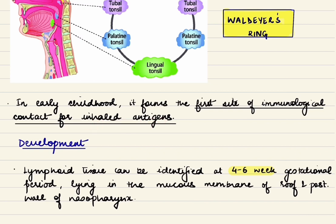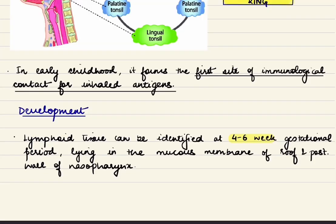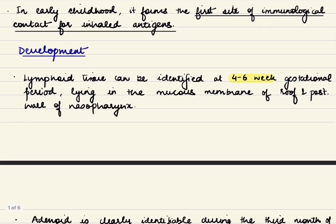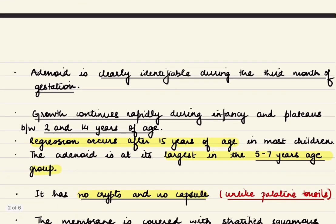Adenoid tissue can be identified at four to six weeks of gestational period, lying in the roof and posterior wall of the nasopharynx, and by the third month it is clearly identifiable. Growth continues rapidly during infancy and plateaus between 2 and 14 years of age, after which there is regression in most children. The adenoid attains its largest size at around 5 to 7 years of age.